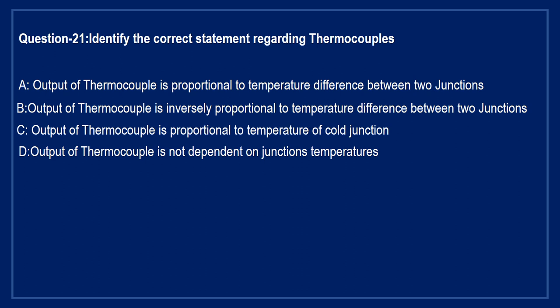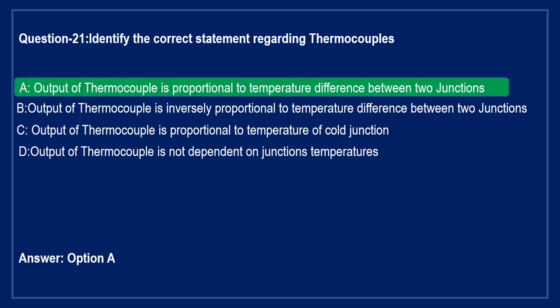Next question: Option A: output of thermocouple is proportional to the temperature difference between two junctions. Option B: the output is inversely proportional to the temperature difference. Option C: the output is proportional to the temperature of the cold junction. Option D: the output is not dependent on junction temperatures. The right answer is Option A — output of thermocouple is proportional to the temperature difference between two junctions.